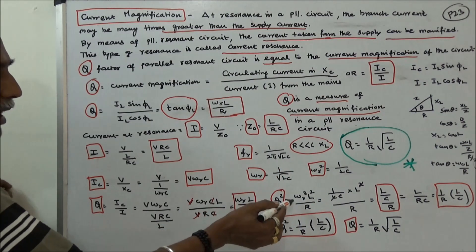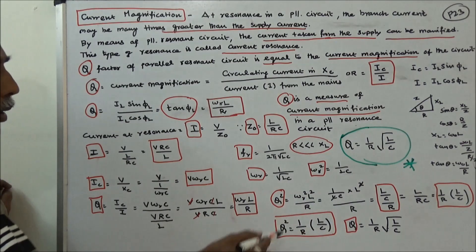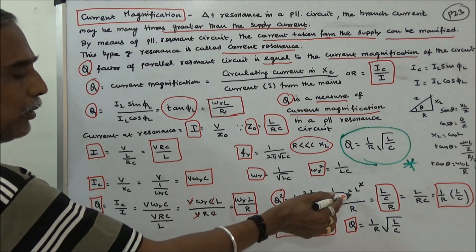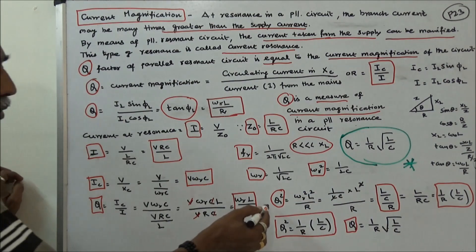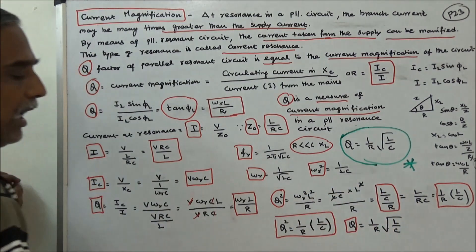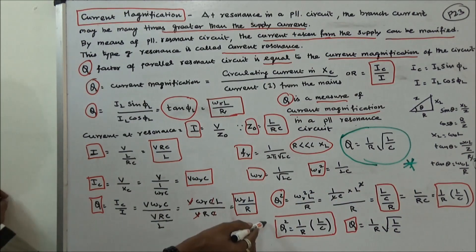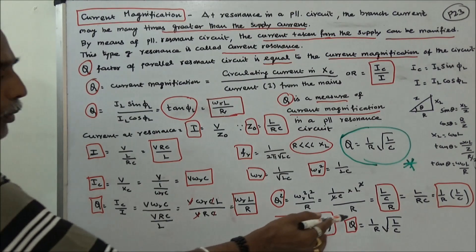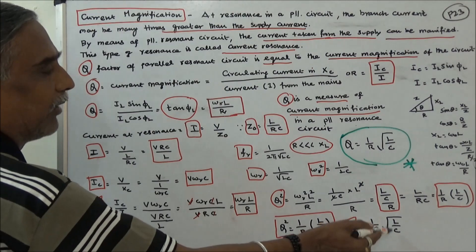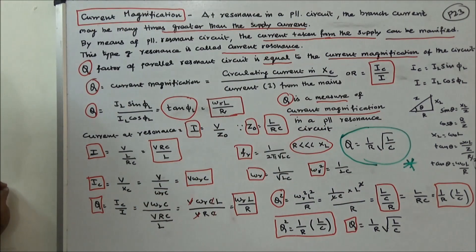Substituting ωR² = 1/LC, we get Q² equals (1/LC)·L² divided by R², which simplifies to Q² equals L divided by RC. This can be written as Q² equals (1/R²)·(L/C). Therefore Q equals (1/R)·√(L/C). This Q is a measure of current magnification in a parallel resonance circuit.